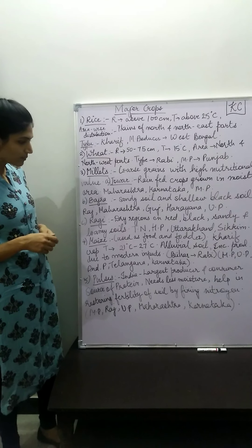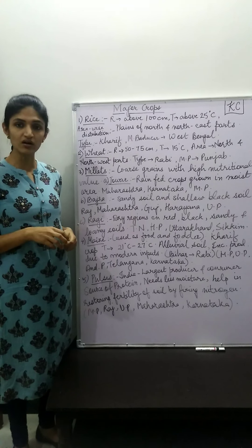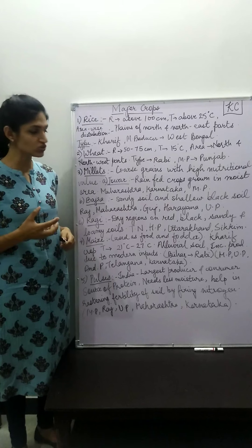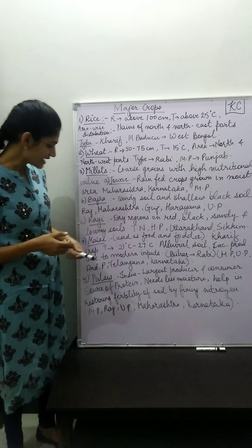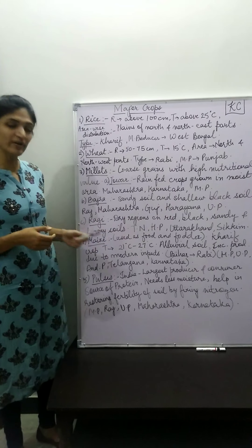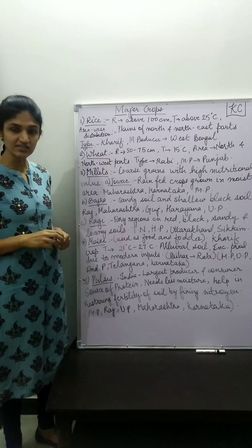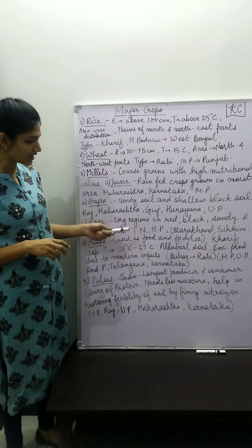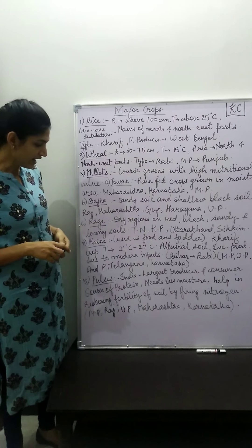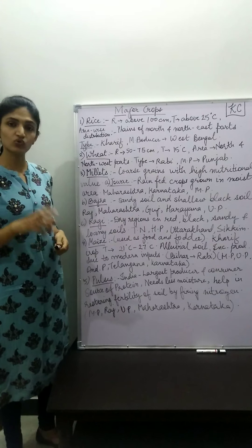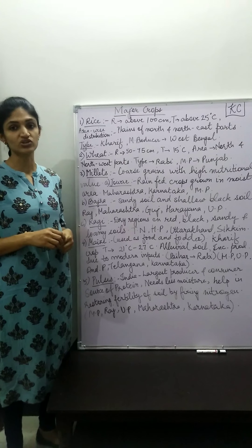The third millet crop is Ragi. Ragi is also grown in dry regions. It grows in red, black, sandy, and loamy types of soil. State-wise, Tamil Nadu, Himachal Pradesh, Uttarakhand, and Sikkim are the states where Ragi is produced in large quantities.